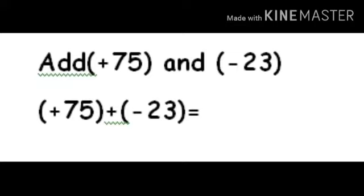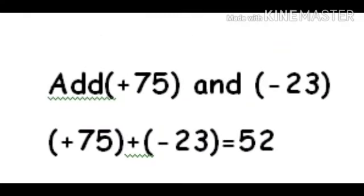Our second problem is: add positive 75 and negative 23. Here also we have integers having different signs, so we have to subtract the two numbers and write the sign of the greater value. The difference between 75 and 23 is 52, and the sign of the greater value is positive. The answer is positive 52.